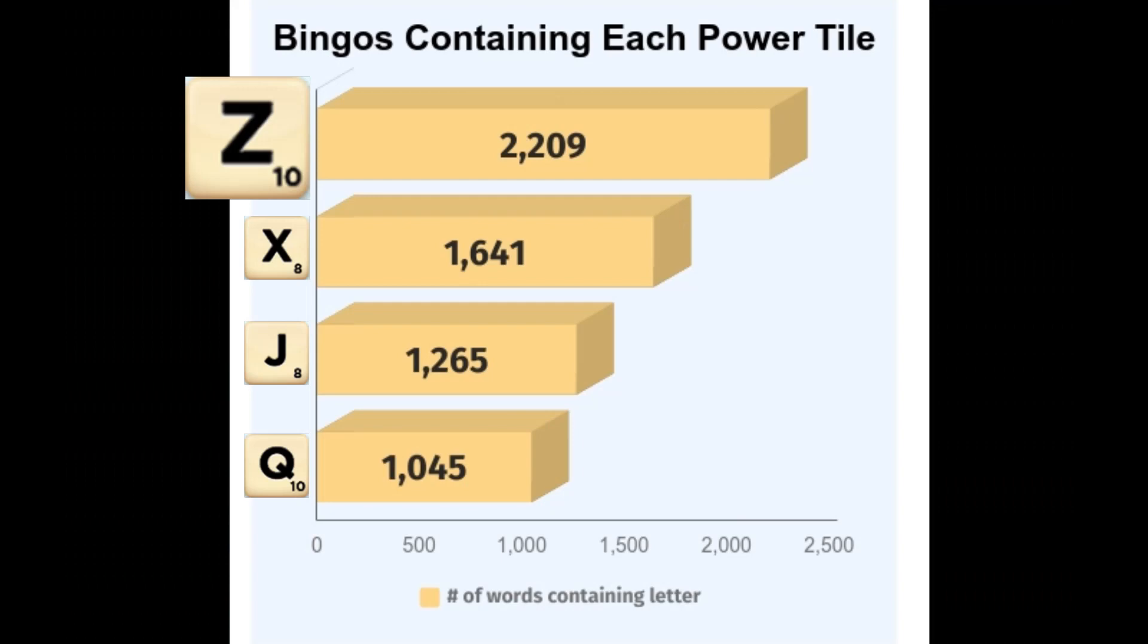It's not all bad news for the Z with respect to playing bingos. At the very least, it outperforms the rest of the Power Tiles by a solid margin. As you can see, there are roughly twice as many bingo length words containing a Z as there are words containing the Q and J.